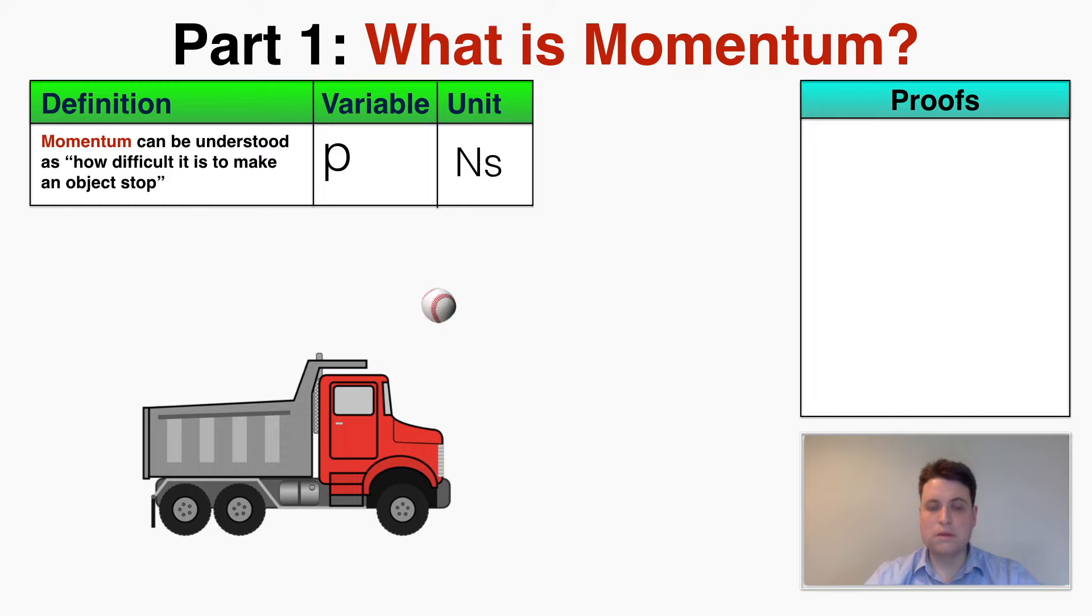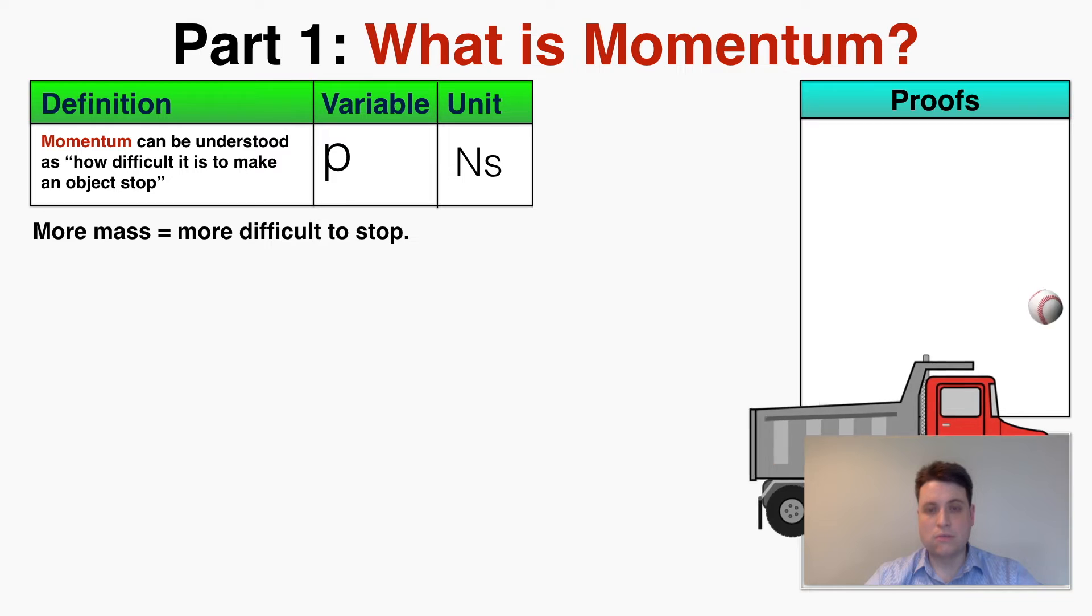The reason why is that the truck has more mass than the ball. So it seems like if something has more mass it's probably going to be more difficult to stop, so more mass probably means that the thing has more momentum.